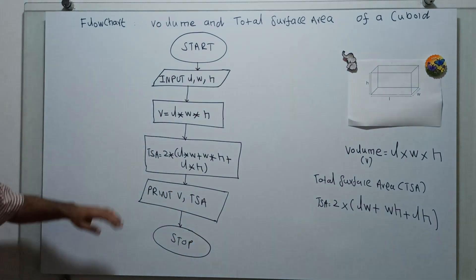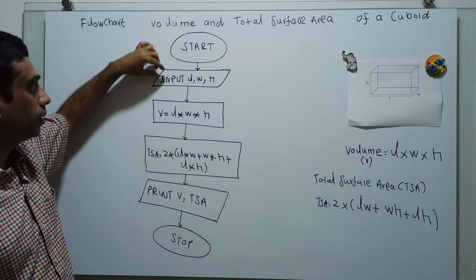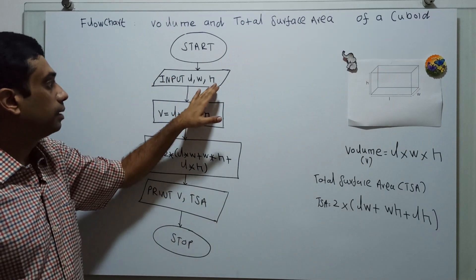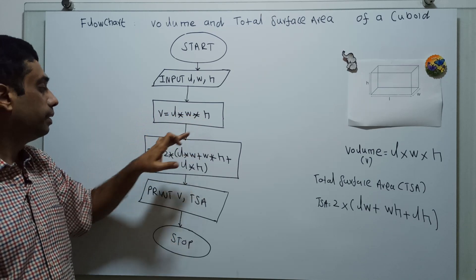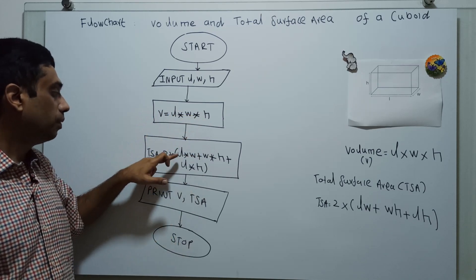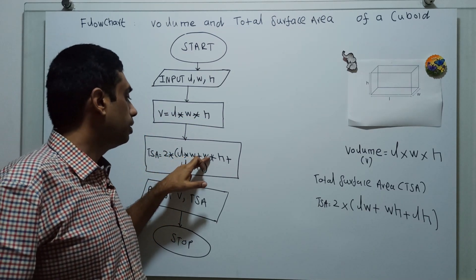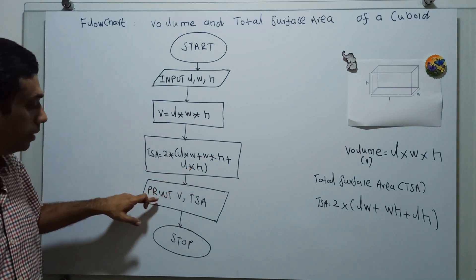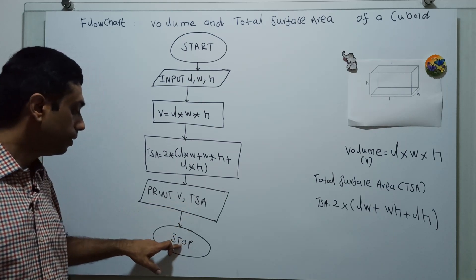To summarize the flowchart: Start — obtain length, width, and height as input — calculate volume V = length × width × height — calculate total surface area TSA = 2 × (length × width + width × height + length × height) — print volume V and total surface area TSA — Stop, the logical end of the flowchart.